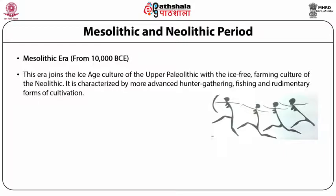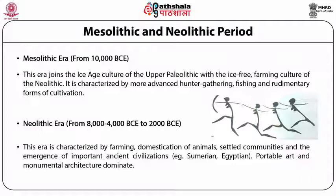The Mesolithic era joins the Ice Age culture of the Upper Paleolithic with the ice-free farming culture of the Neolithic. It is characterized by more advanced hunter-gathering, fishing, and rudimentary forms of cultivation. The Neolithic era is characterized by farming, domestication of animals, settled communities, and the emergence of important ancient civilizations like Sumerian and Egyptian, with portable art and monumental architecture dominating.